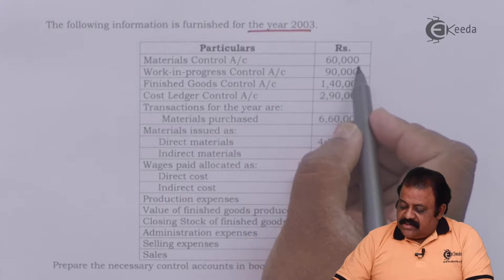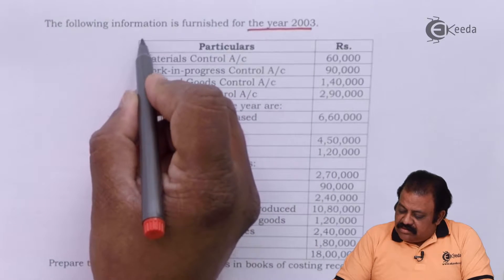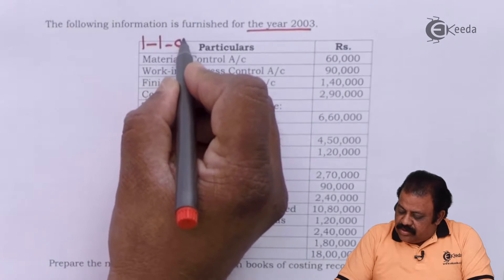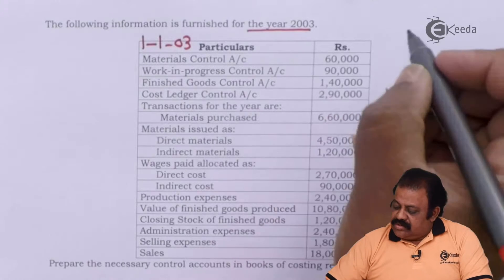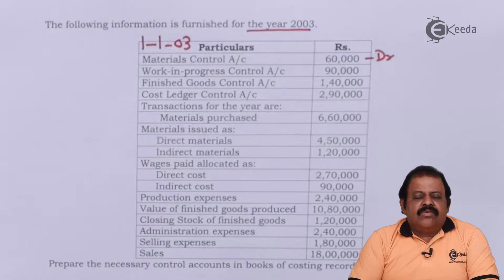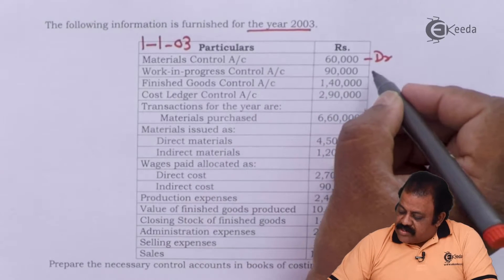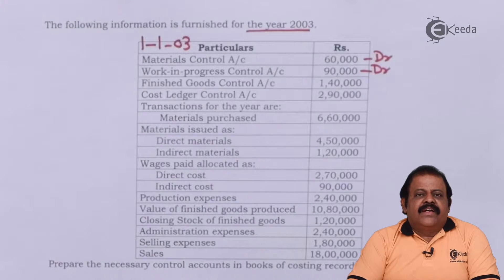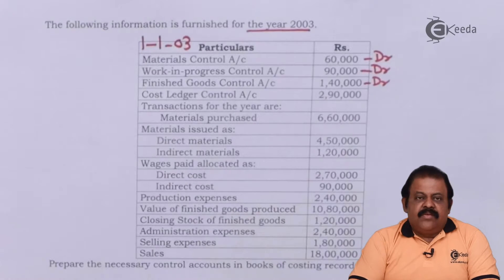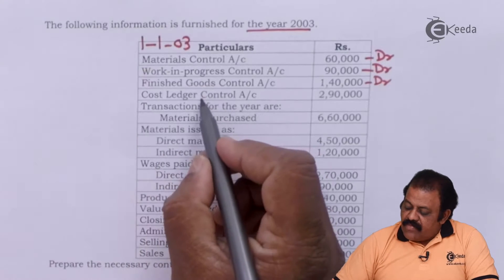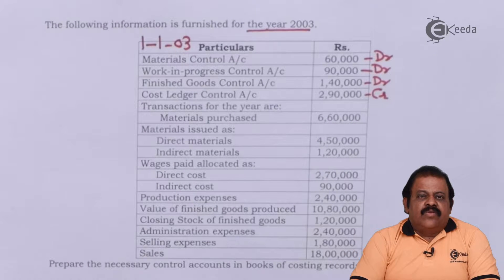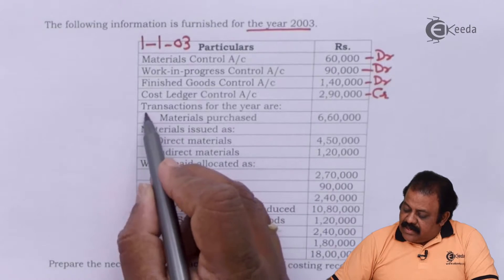The opening balances as on 1st January 2003 are: Material Control Account 60,000 — this will be recorded to the debit of Material Control Account as balance brought down. Work in Progress Control Account and Finished Goods Control Account will also be recorded as debit balances brought down. Cost Ledger Control Account will be recorded on the credit side as balance brought down.